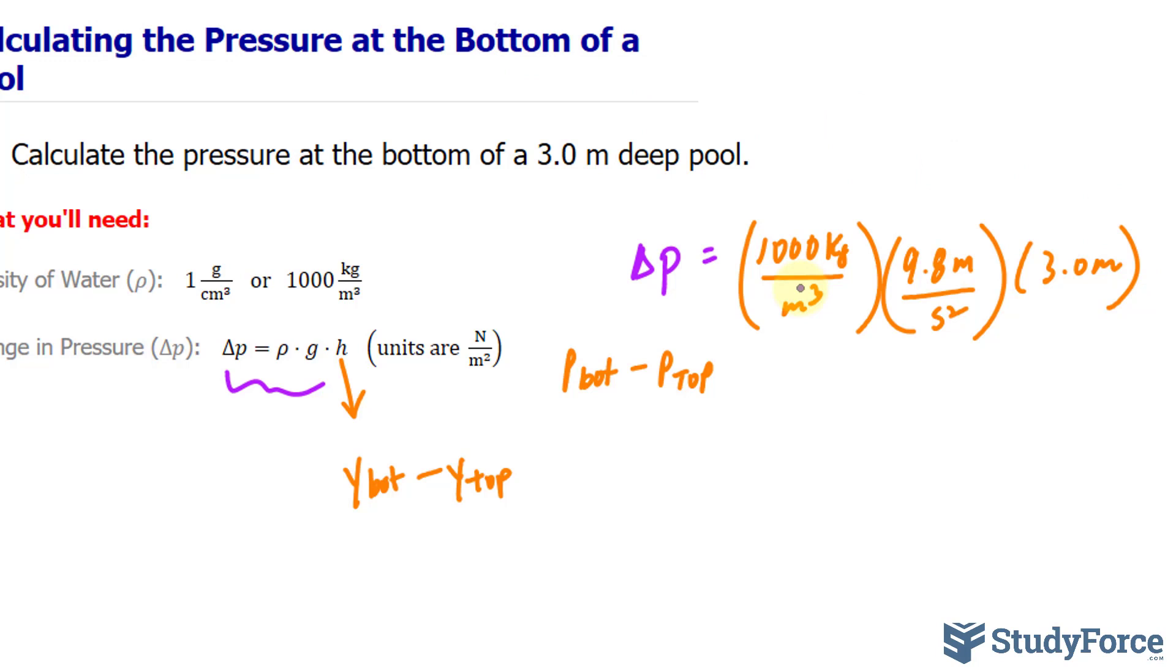Now let's see how all these units cancel out. We have meters and meters. That becomes meters squared. And that cancels out with two of these, making this into meters. So this is gone. That's gone.